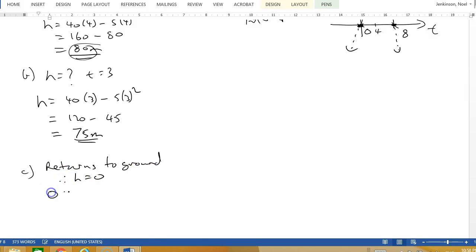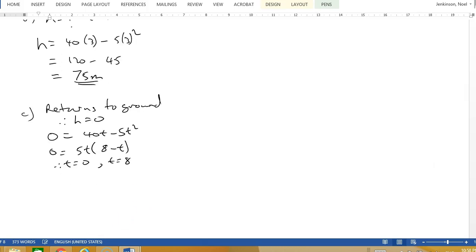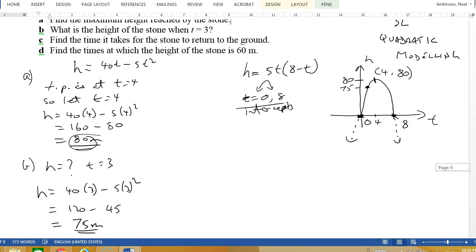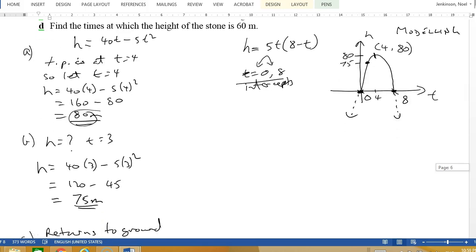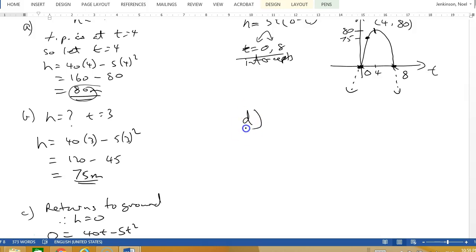Returns to ground: h equals 0. So I'm going to solve 0 equals 40t minus 5t squared. I'll take out a 5 and a t, and get 5t(8 minus t). Therefore t equals 0 or t equals 8. So it returns to ground after 8 seconds. You can see it returns to ground after 8 seconds in the graph.